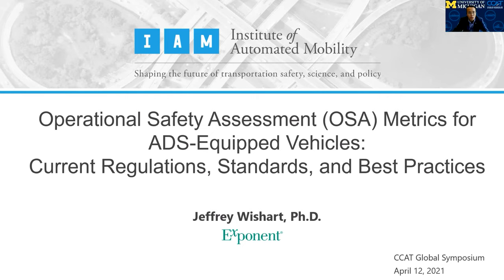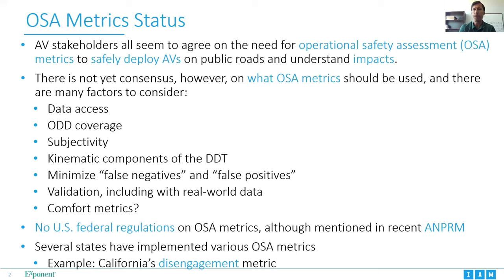Thanks very much, Henry. I'm going to talk about some of the regulations, standards, and best practices that are out there, mostly with a U.S. focus, but including something from the UNECE on the regulation side. Basically, how do we get to a point where we're all agreeing on what metrics should be used? Everyone agrees there's a need for what I call operational safety assessment, or OSA metrics, to safely deploy automated vehicles on public roads. We don't yet have consensus on what OSA metrics should be used, and there are lots of factors to consider.